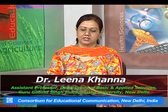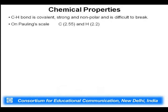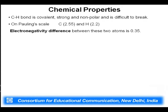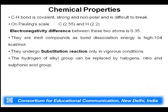In the last lecture we started alkanes, discussing physical properties and preparation. Today's lecture is dedicated to the chemical properties of alkane. The C-H bond is a highly strong covalent bond with no electron-withdrawing group. On the polarity scale, the electron difference between carbon and hydrogen is only 0.35, making this bond highly strong, non-polar, and difficult to break. The C-H bond energy is 104 kilocalories per mole.